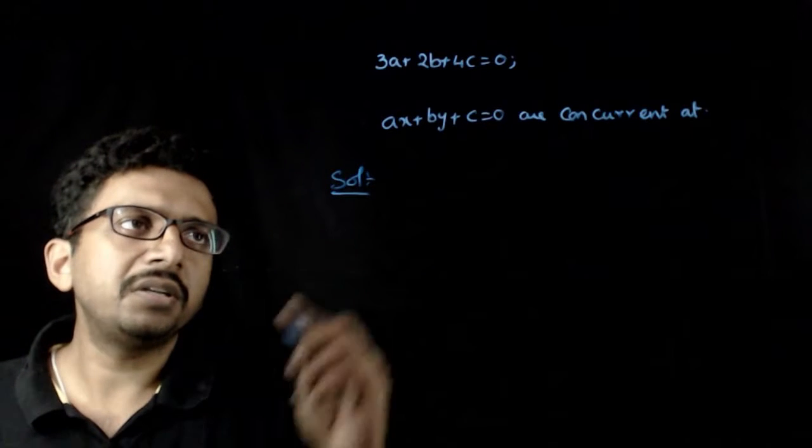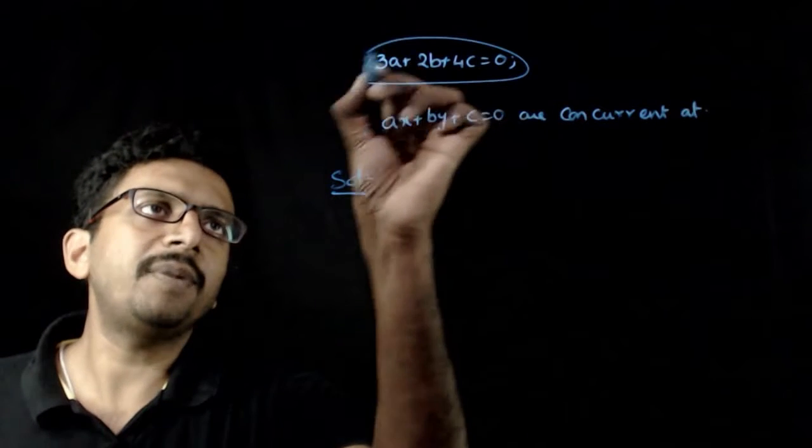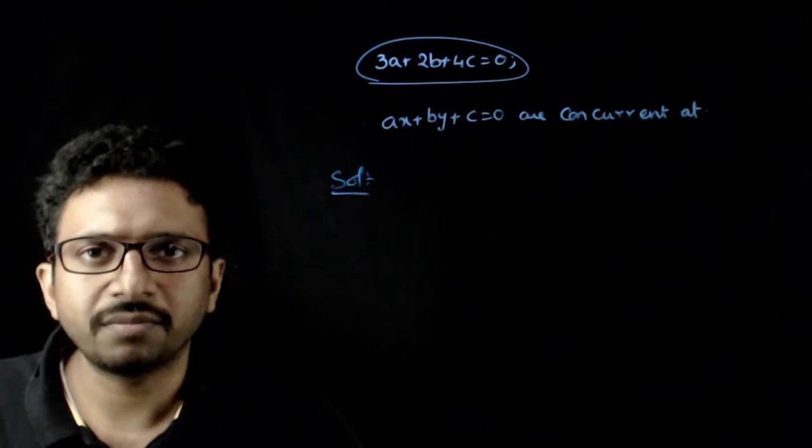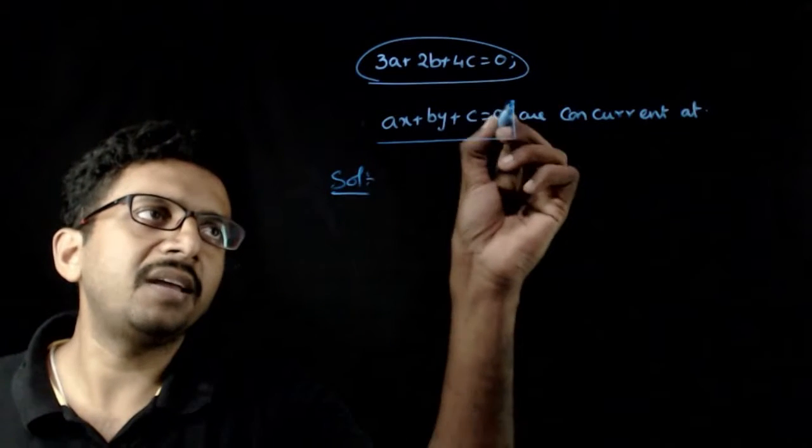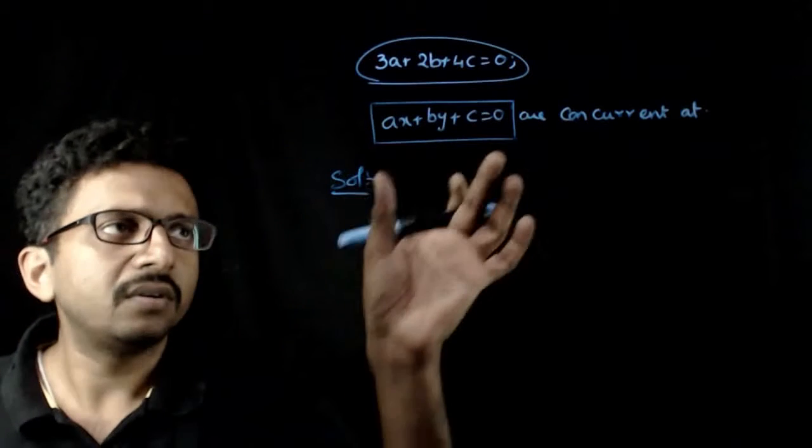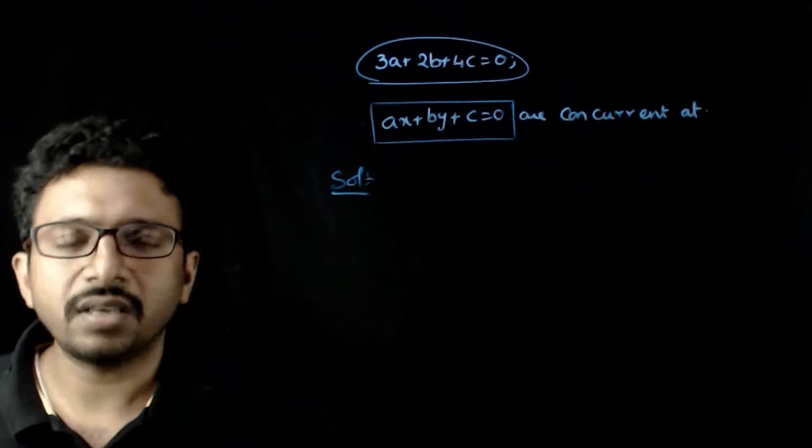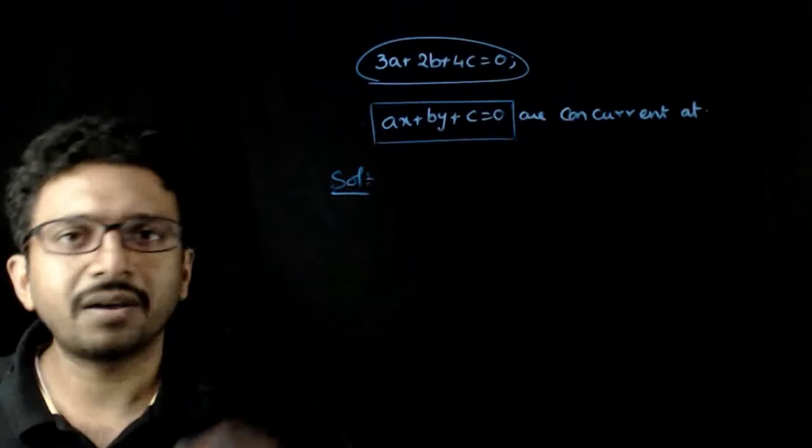Welcome students. In this question, you are given that 3A plus 2B plus 4C equals 0. If that is so, the line Ax plus By plus C equals 0. The set of lines Ax plus By plus C equals 0 are concurrent at which point?